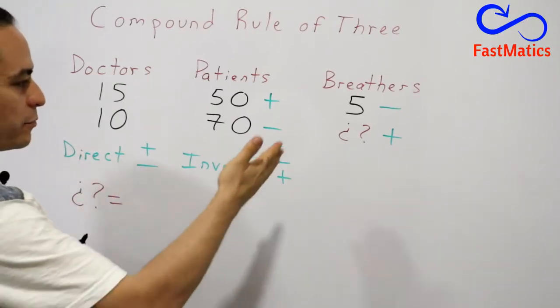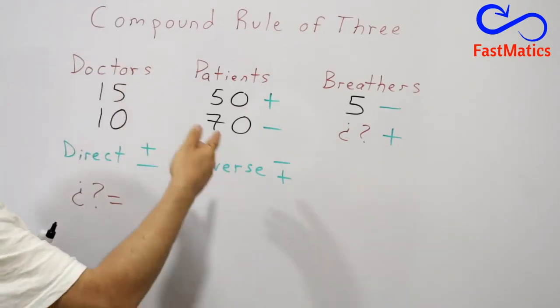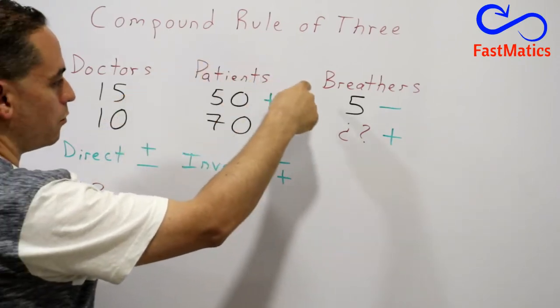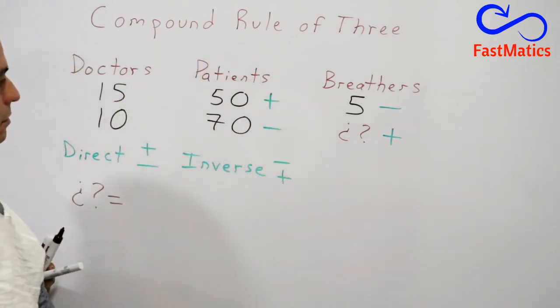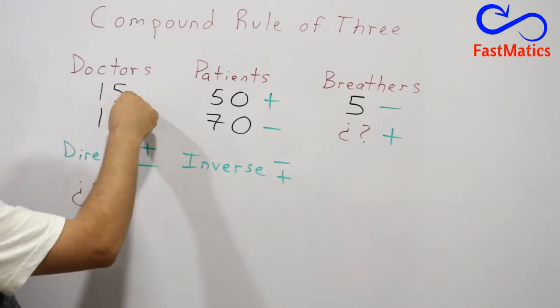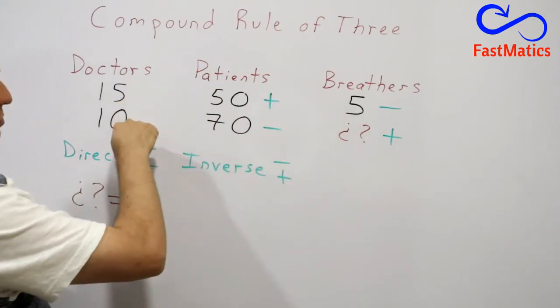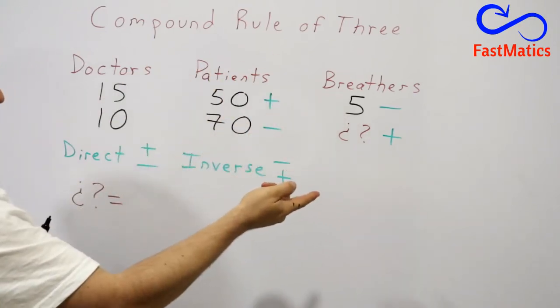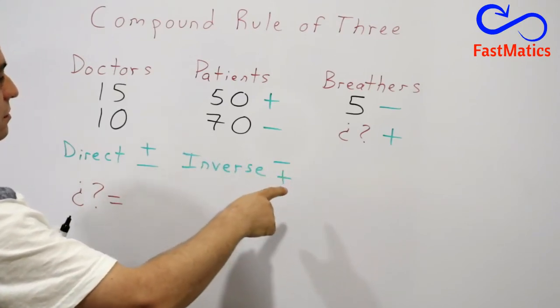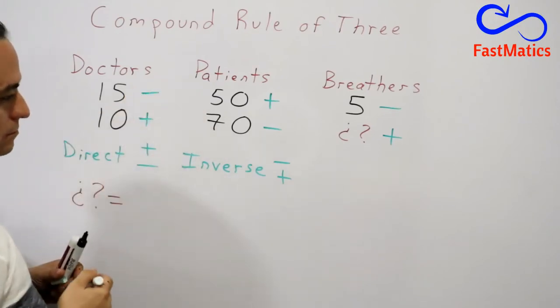After that, we are going to compare breathers and doctors. If you have more doctors, do you need more breathers or less breathers? More doctors, less breathers. Less doctors, more breathers. So we have an inverse rule of three. We are going to write minus and plus.